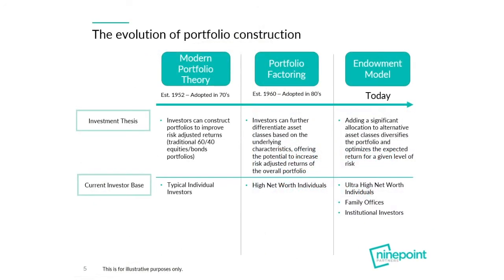Here's our slide on the evolution of portfolio construction, showing how portfolio construction has evolved over time. Modern portfolio theory started the trend — your traditional 60-40 equity to bonds portfolio. We moved on past that into the portfolio factoring model where investors could further differentiate their portfolios based on asset class underlying characteristics: value equities, growth equities, sovereign bonds, corporate bonds, and high yield bonds. Today, institutional investors are using the endowment model where they've broadened the investment universe and added a significant allocation to alternative asset classes, which diversified the portfolio and optimized the expected return for a given level of risk.